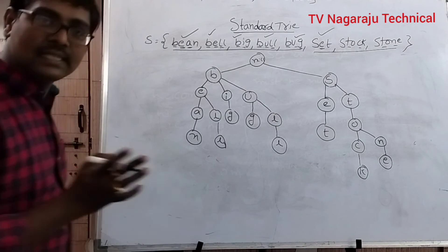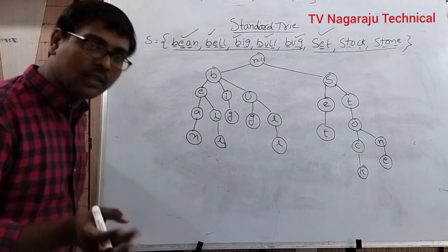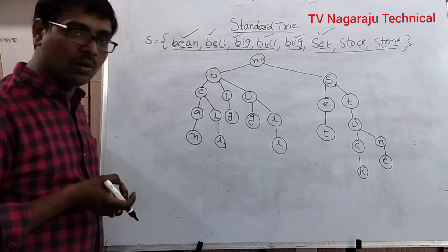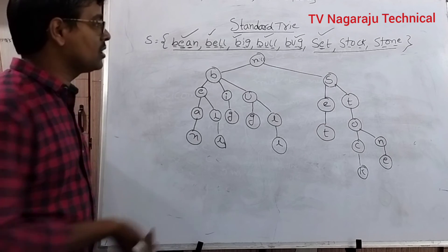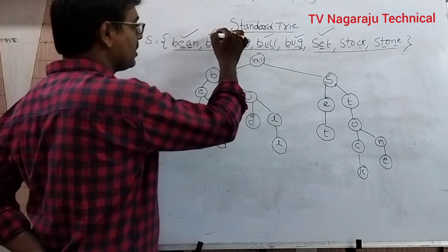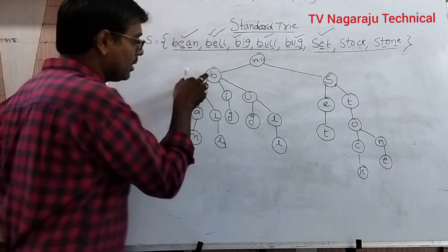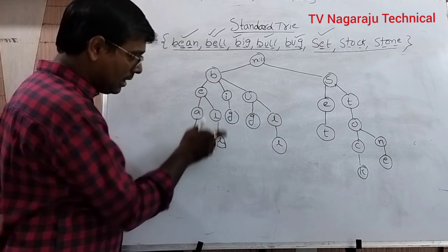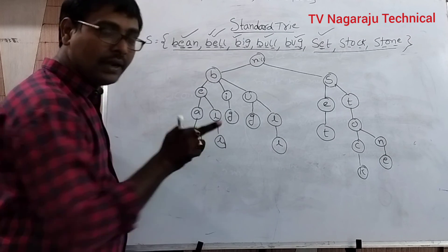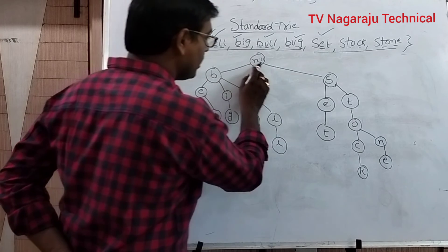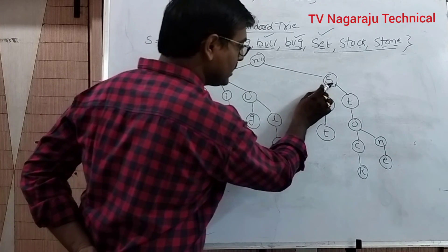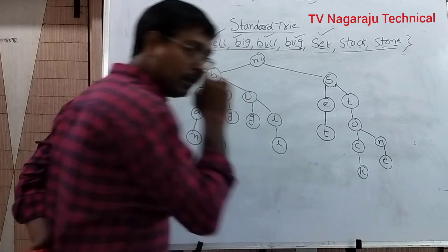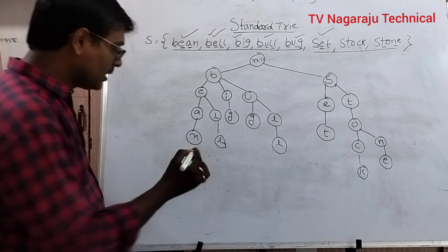Now consider a path from the root node to an external node — it gives a string. For example, identify the string Bell: follow the path B-E-L-L. Identify the string Stone: follow the path null to S-T-O-N-E. This is the way paths in the trie represent strings.